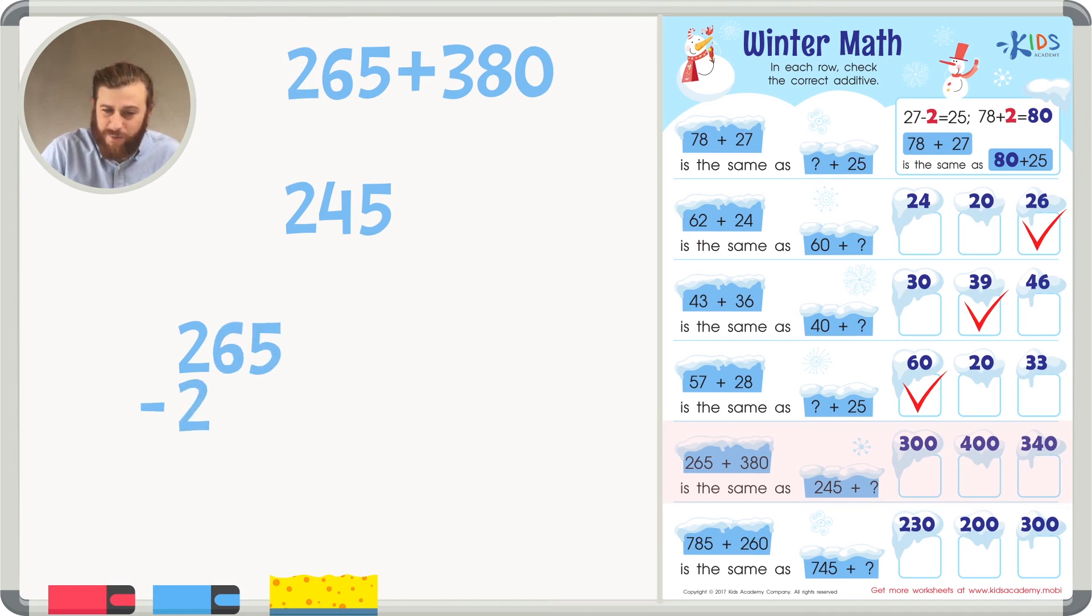265 minus 245. 5 minus 5 is 0. 6 minus 4 is 2. And 2 minus 2 is 0. So it is 20 less.